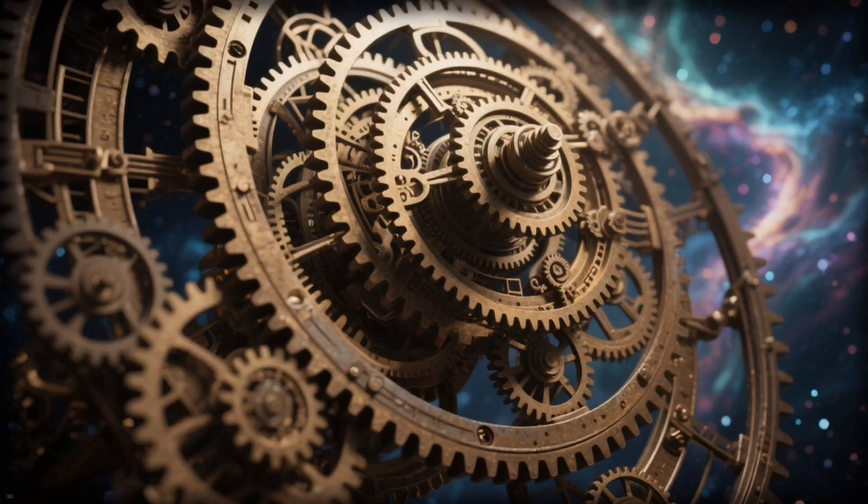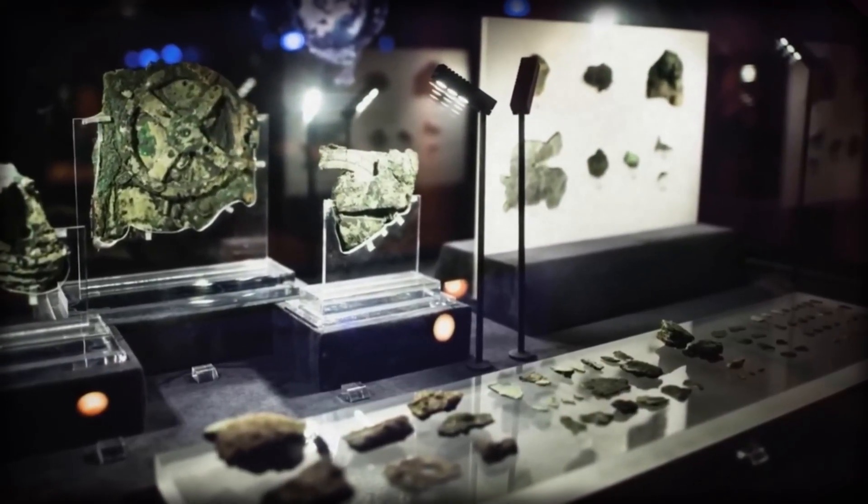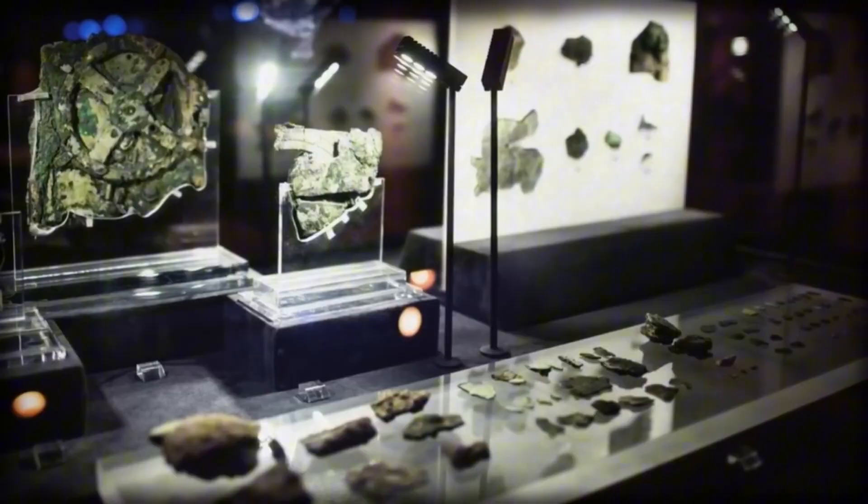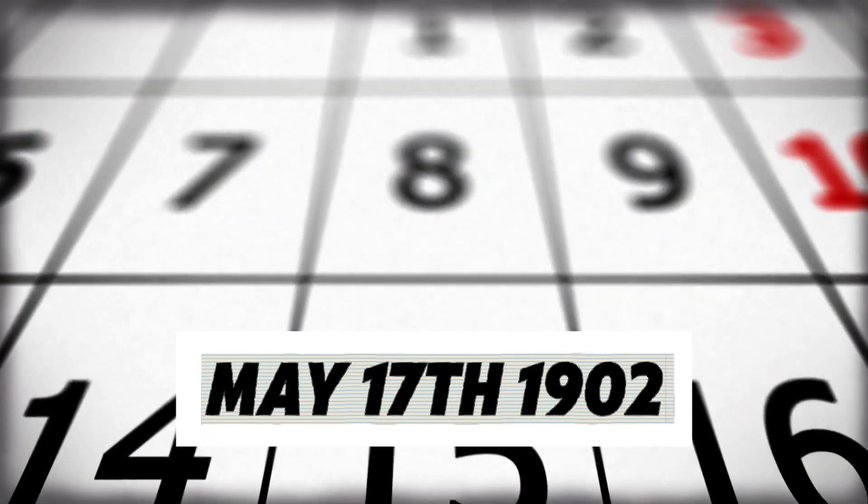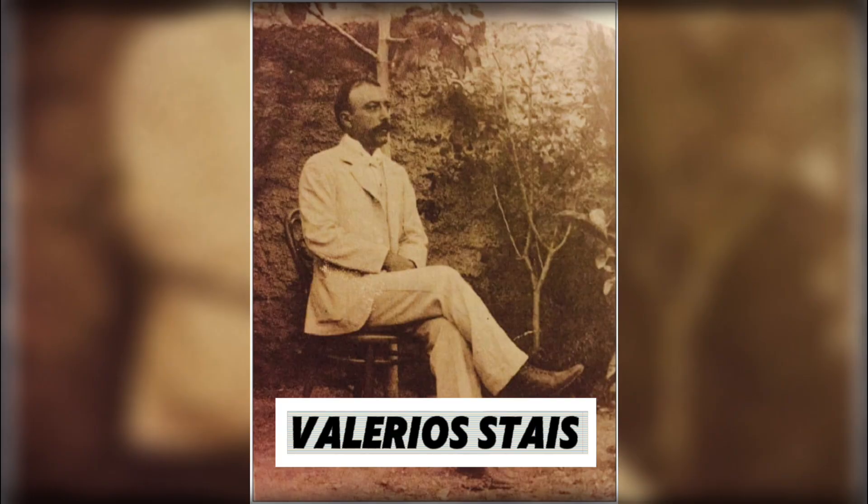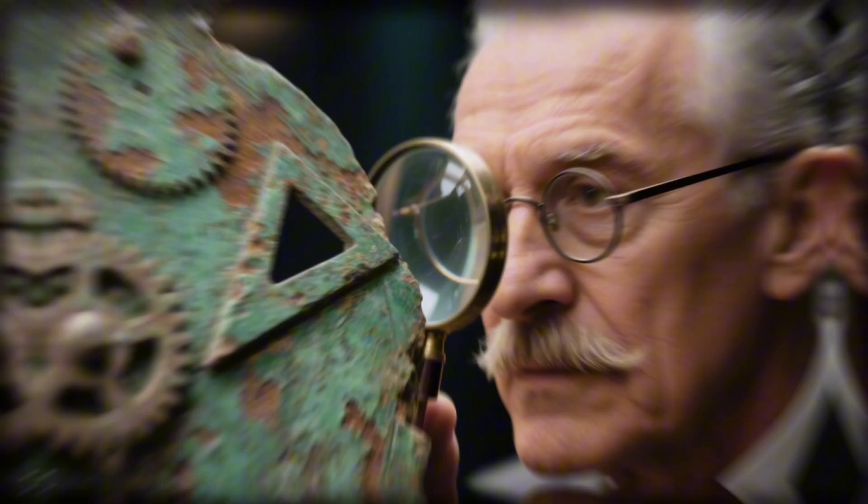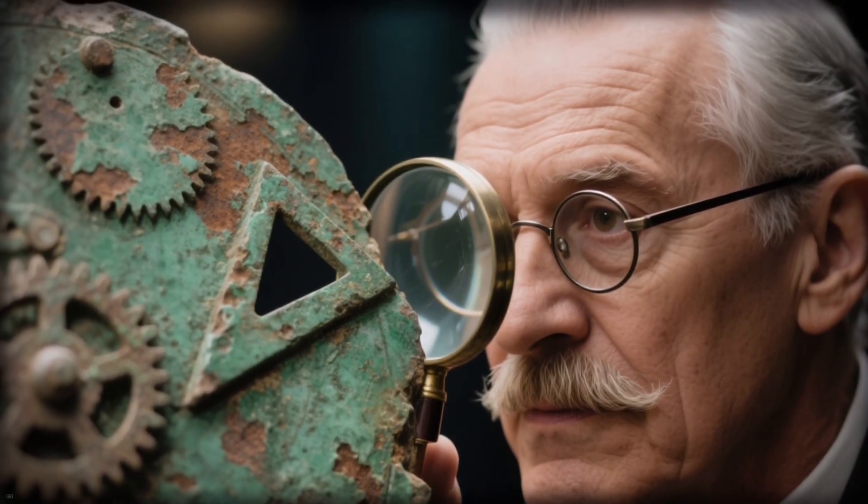The strange, corroded mass sat quietly in the museum's storeroom. Just another artifact from a shipwreck that time had nearly erased. But on May 17th, 1902, a curator named Valerios Stice leaned closer to examine it under the light. Beneath the crust of bronze and rock, something caught his eye. The faint outline of teeth. Not human teeth. Gear teeth.